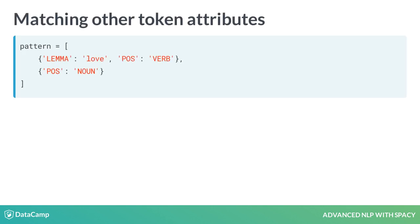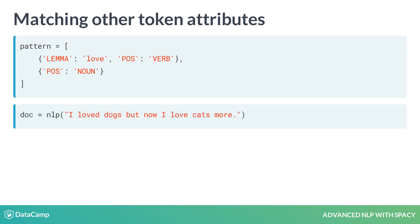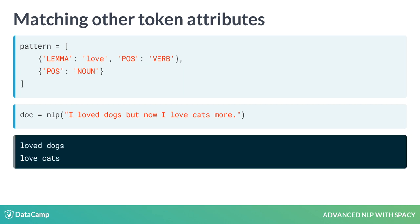In this example, we're looking for two tokens: a verb with a lemma 'love' followed by a noun. This pattern will match 'love dogs' and 'love cats'.